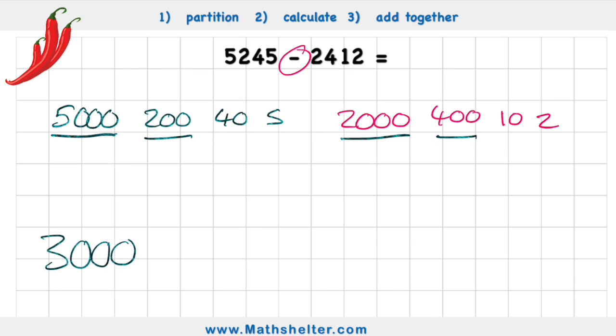200 subtract 400. I can't do that. So now I'm going to have to think back to my 3,000 and say to myself, well, I need now one of these 1,000. So I'm going to knock that down to 2,000.